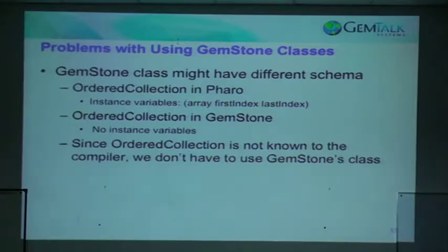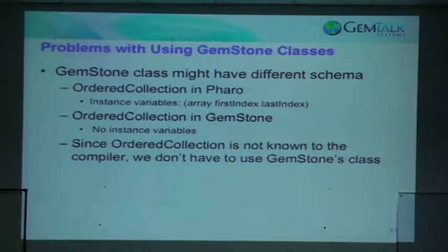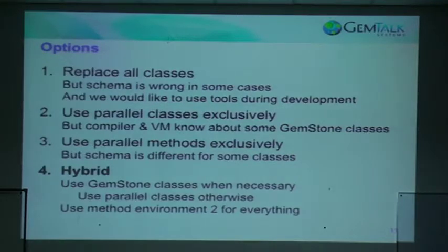There are some problems with using the GemStone classes — we might have a different schema. OrderedCollection in Pharo has an array, a start, and an end, whereas in GemStone we have no instance variables because we implement it as a built-in indexed structure. But OrderedCollection is not known to the compiler, so we can give you a different OrderedCollection class. So our options are: one, replace all the classes; two, use parallel classes exclusively; three, use parallel methods exclusively; and four, the hybrid approach — which is the path we're going down here.